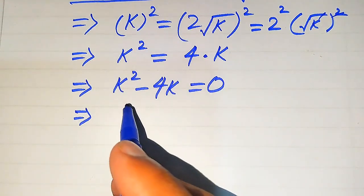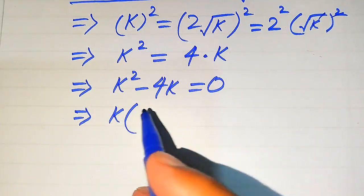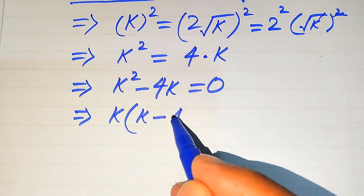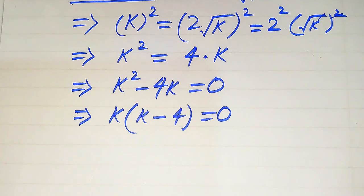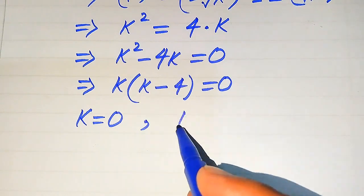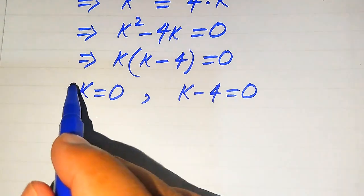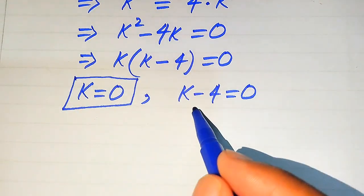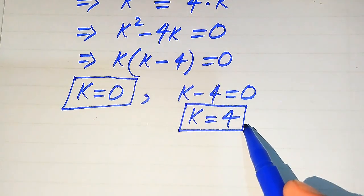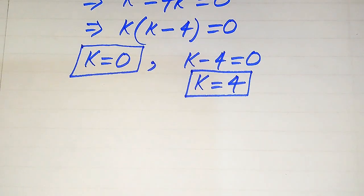Both terms involve k, so k is the common factor. Taking out k, we get k times (k minus 4) equals 0. This splits into two cases: the first case gives k equals 0, and the second case gives k minus 4 equals 0, so k equals 4. These are the two roots of the given equation from Method 1.